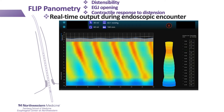We see normal EGJ opening, normal distensibility of the esophageal body, and this normal contractile response with the pattern of repetitive antegrade contractions, or RACs, which represent propagating secondary peristalsis that repeats due to the sustained distension created by the FLIP study.